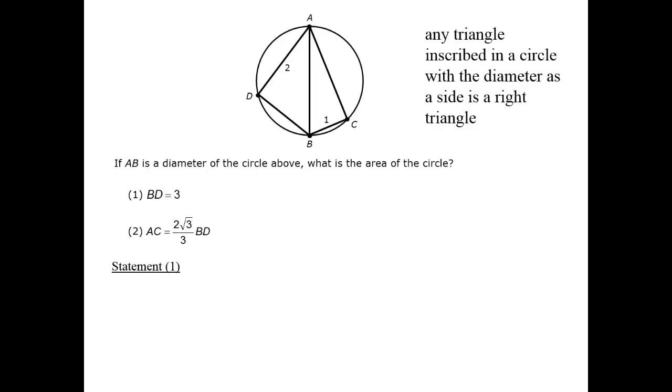Statement 1 gives us exactly such a situation. AD is indicated in the diagram and we are told BD, so we have two sides of a right triangle and can use the Pythagorean theorem to get the third. Therefore, we can get the diameter and statement 1 is sufficient.